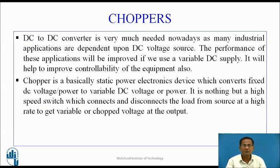A DC to DC converter is very much needed nowadays as many industrial applications are dependent upon a DC voltage source. The performance of these applications will be improved if we use a variable DC supply. Chopper is basically a static power electronics device which converts fixed DC voltage or power to variable DC voltage or power.